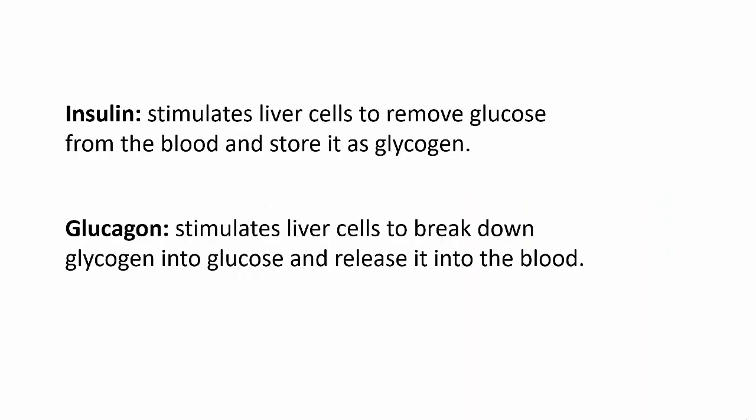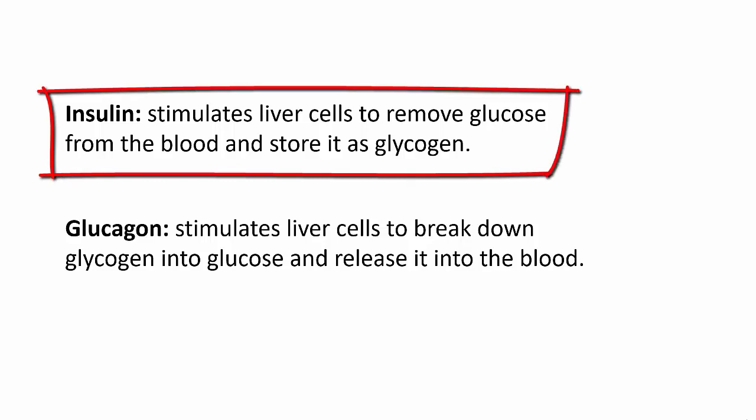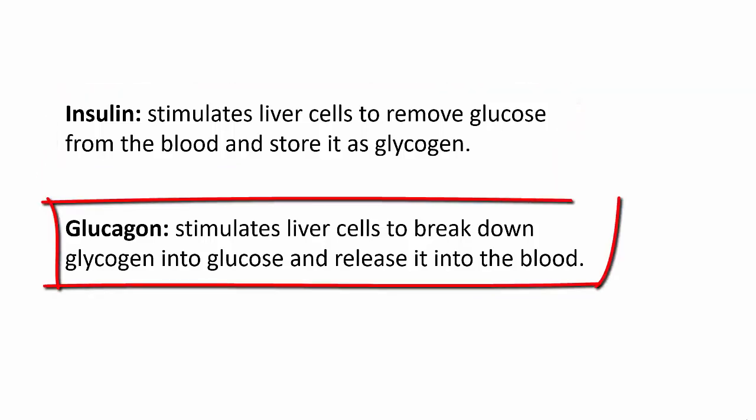Remember that in the negative feedback loop that controls blood sugar levels, the hormones released by the pancreas are the two responses that help keep your blood sugar levels steady. Insulin stops blood sugar from getting too high, and glucagon stops it from getting too low.